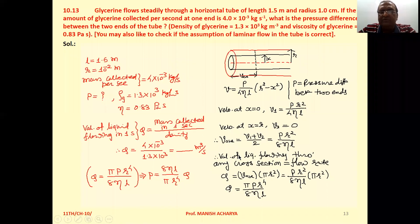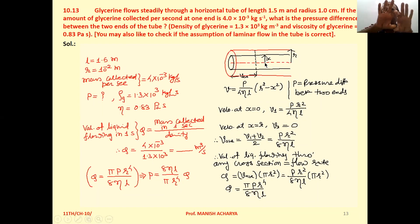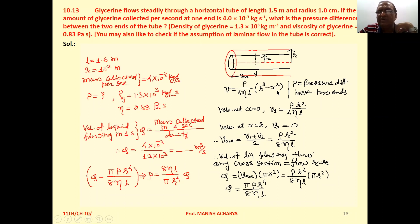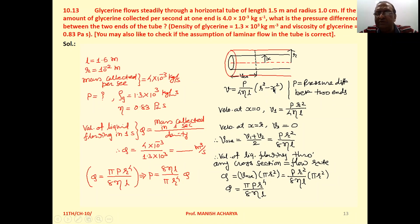Now we can derive this equation. Suppose we have a tube of radius R with fluid flowing in laminar flow. Consider one cylindrical layer having radius X moving with velocity V, given by V = P/(4ηL) × (R² − X²), where P is the pressure difference. If we take X = 0, we get the maximum velocity at the axis. If we take X = R, the velocity will be zero at the wall.